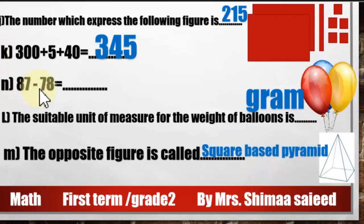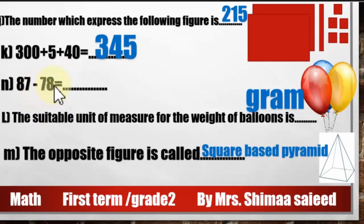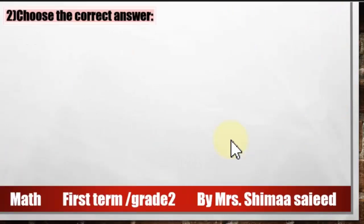87 minus 78 — how can we solve it? We can count up from 78 to get to 87. After 78: 79, 80, 81, 82, 83, 84, 85, 86, 87 — we count 9 numbers, so 87 minus 78 equals 9.